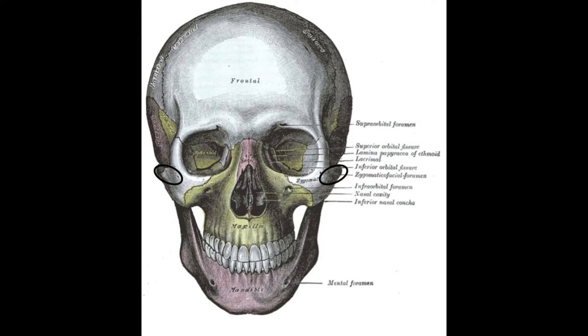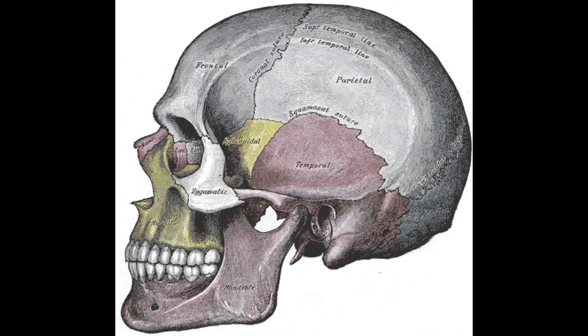This is the zygomatic arch, also comprised of two bones. The anterior portion is made of the zygomatic bone and the posterior portion is actually the temporal bone. This serves as a site of attachment for the masseter muscle. This is a lateral view of the skull where we can actually see the temporal fossa much better.